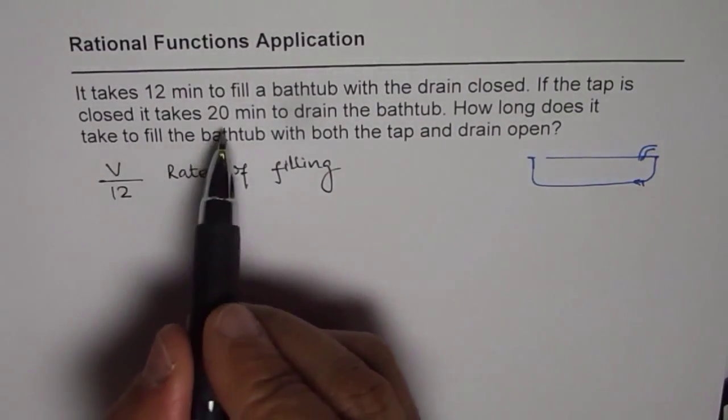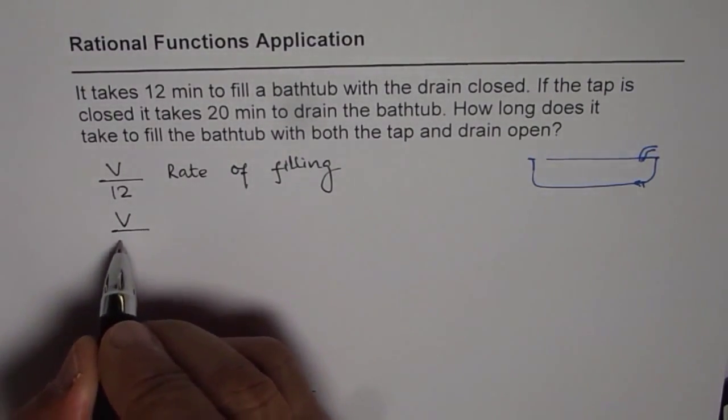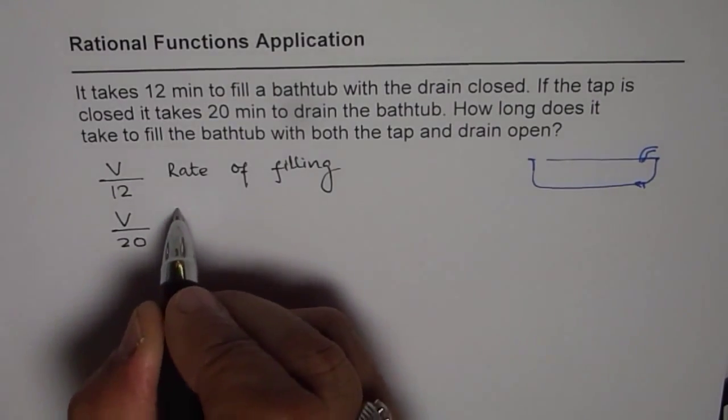If the tap is closed, it takes 20 minutes to drain the bathtub. So the whole volume is drained out in 20 minutes. So that is the rate of drainage.